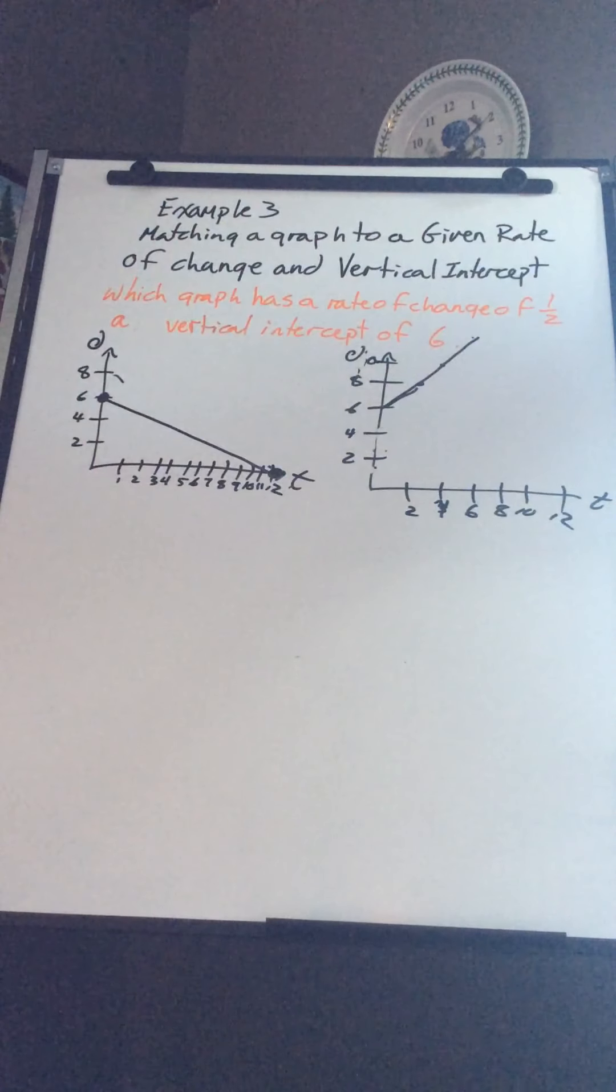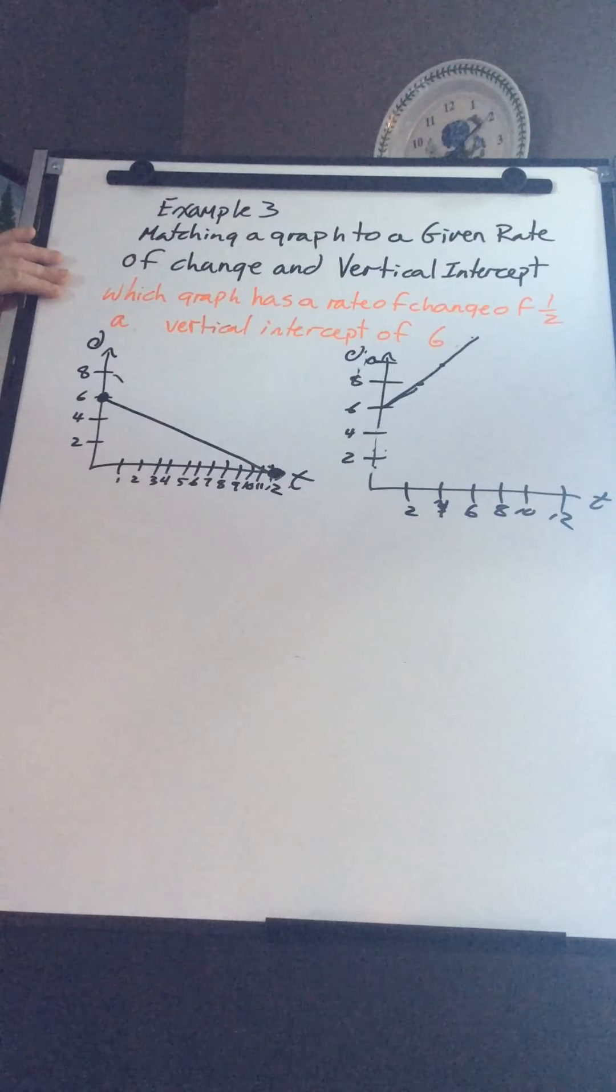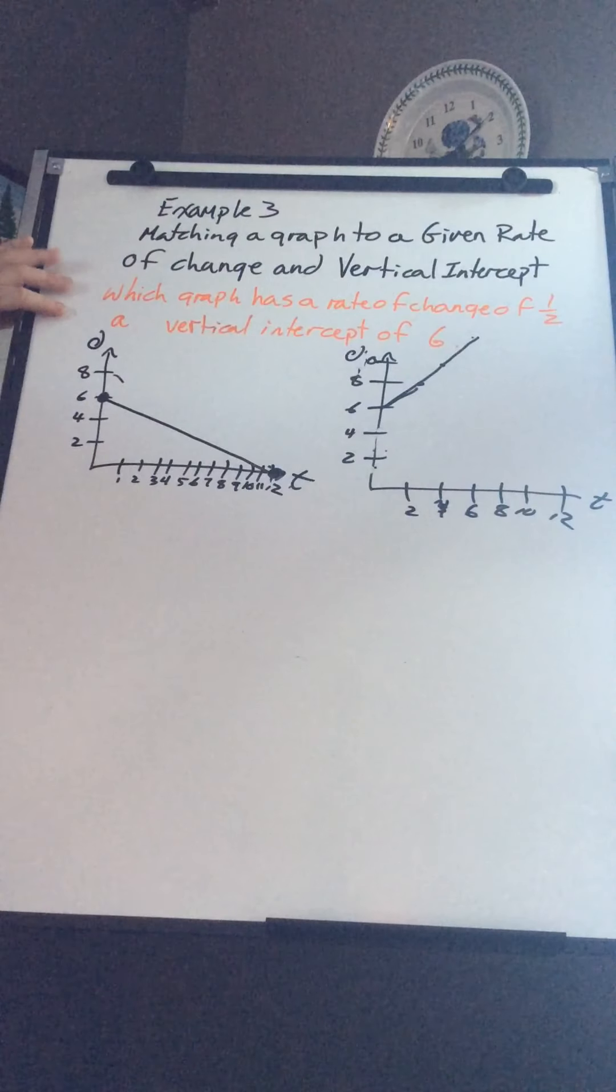So what it's asking us to do here is determine which graph has a rate of change of one-half and a vertical intercept of six.